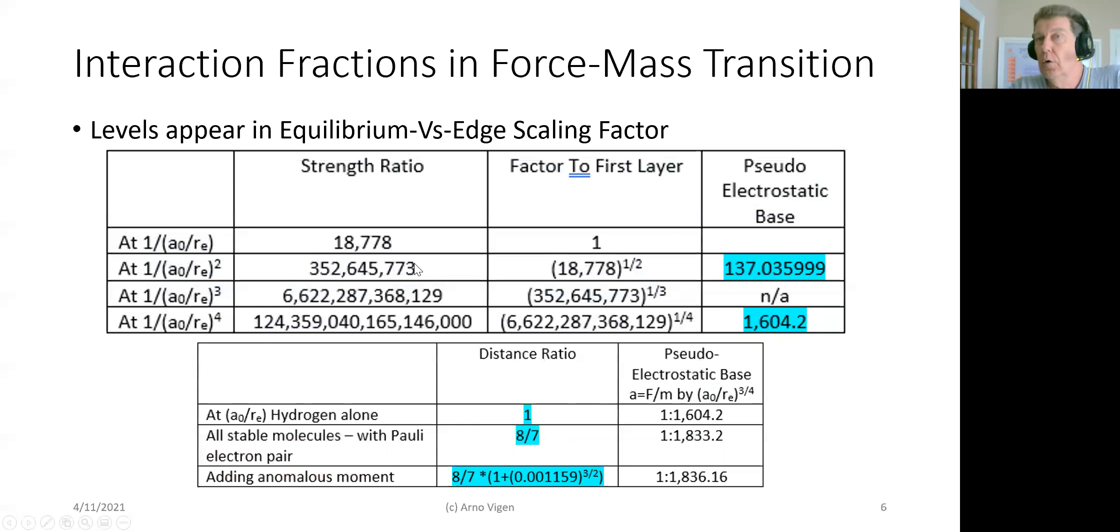Squared is 352 million. And that's the ratio of what charge is per particle. And as you'll see in my paper, we don't use coulombs anymore. There's no charge.